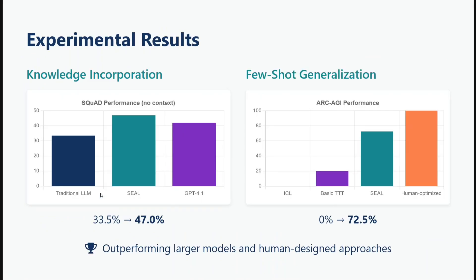The experiments show that SEAL actually works. In terms of knowledge incorporation on the SQuAD dataset, a traditional LM gives about 33.5% while SEAL boosts it to 47% after automatic fine-tuning. For few-shot generalization on ARC-AGI, the numbers are even more impressive — starting from zero, SEAL achieves 72.5%. So it really does work.